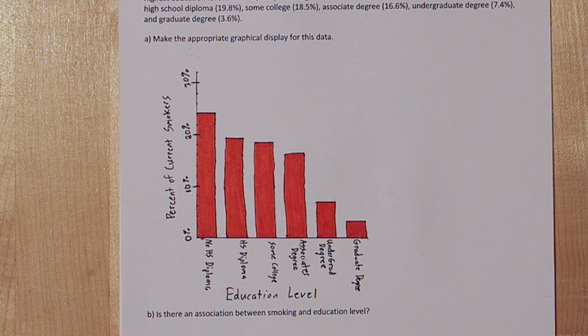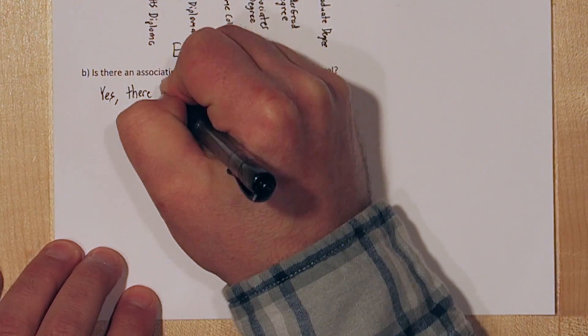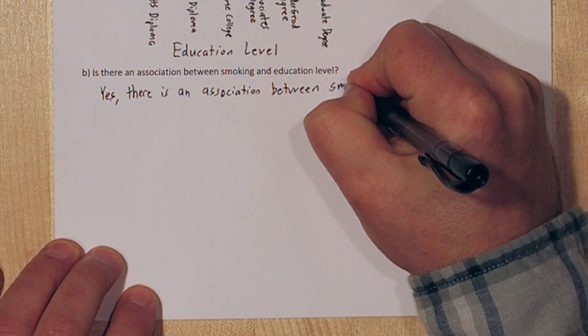Now when we look at this bar graph we can see that as education level increases the percentage of current smokers is declining. So yes, there is association between smoking and education level.